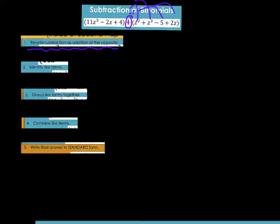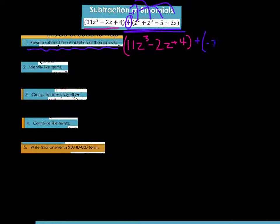Rewrite the subtraction portion of your binomial as addition of the opposite sign. So I'm going to rewrite the first binomial as 11z cubed minus 2z plus 4 in parentheses. Then I'll rewrite the other part as addition of the opposite: a positive z squared becomes negative z squared, positive z to the third becomes negative z to the third, negative 5 becomes positive 5, and the same with 2z.